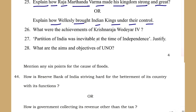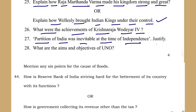Lord Wellesley's subsidiary alliance system is key here. Then: what were the achievements of Krishna Raja Wadiyar IV? And: was the partition of India inevitable at the time of independence — justify. Very important freedom struggle question.